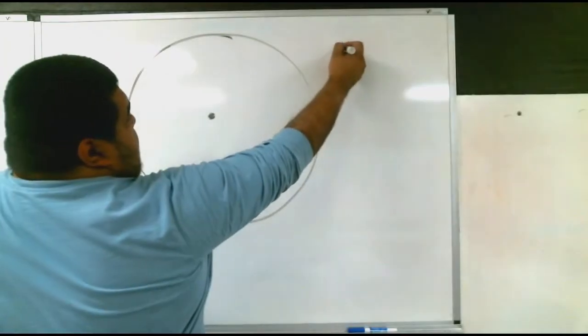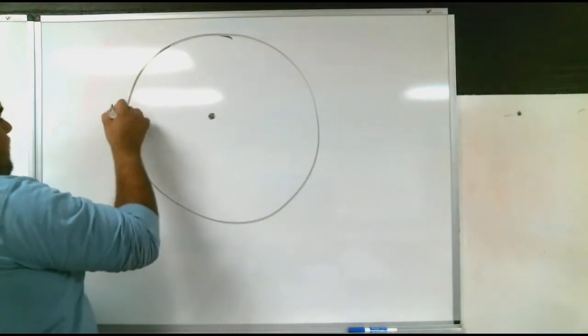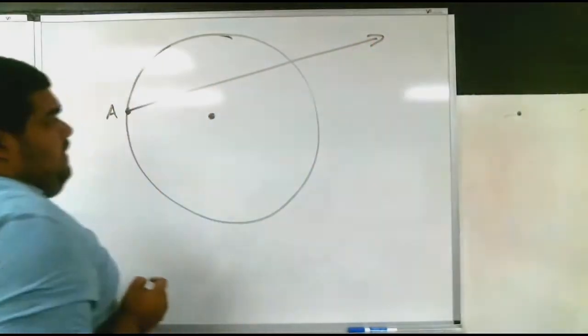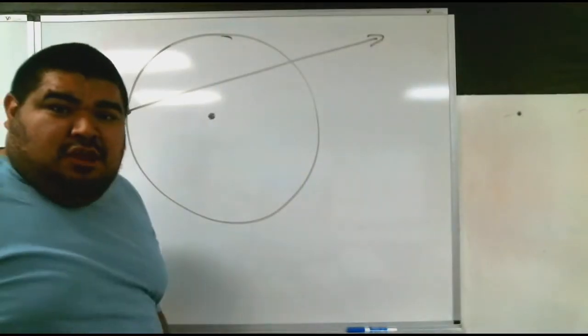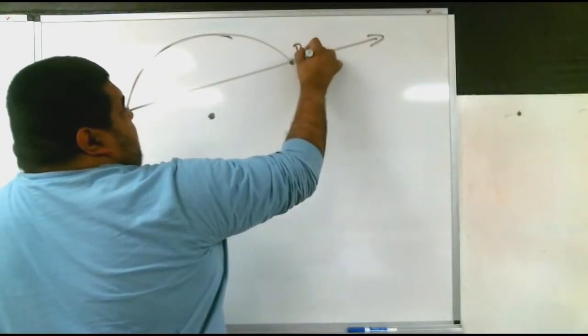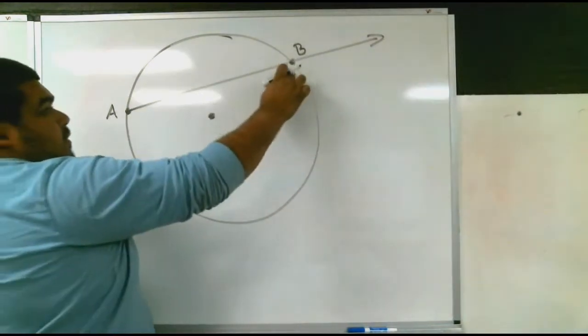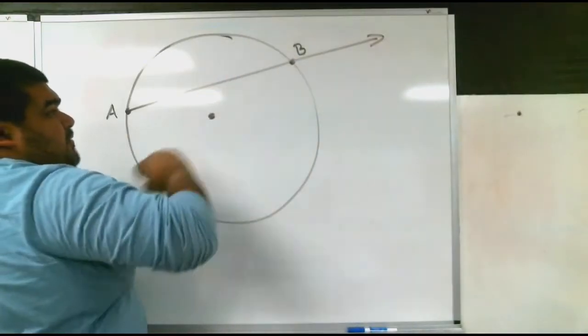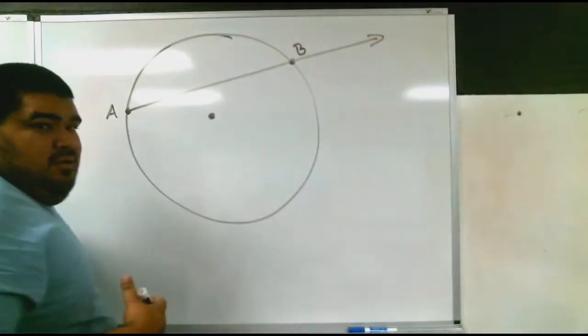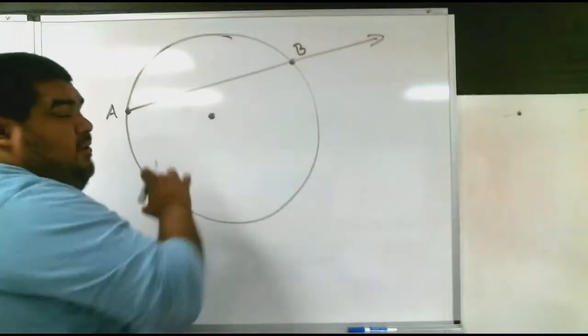So if you have this line that goes from here, from A, and it goes out, it creates a chord in a way where we have A and B. From A to B is a chord. If the line continues, if you guys remember, it's called something that goes through the inside—it's called a secant.